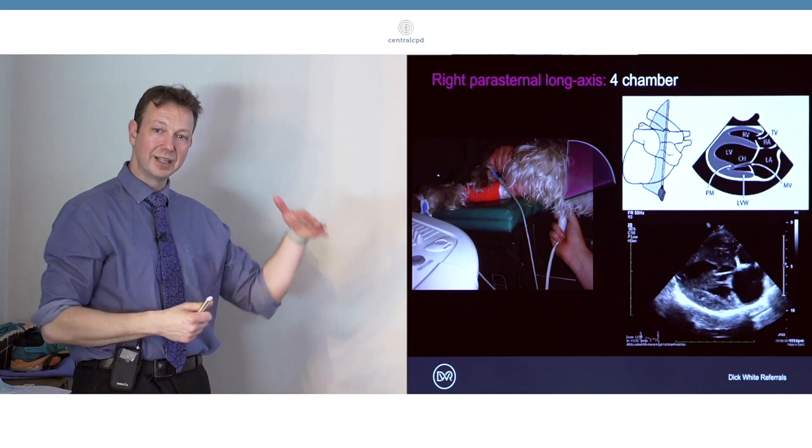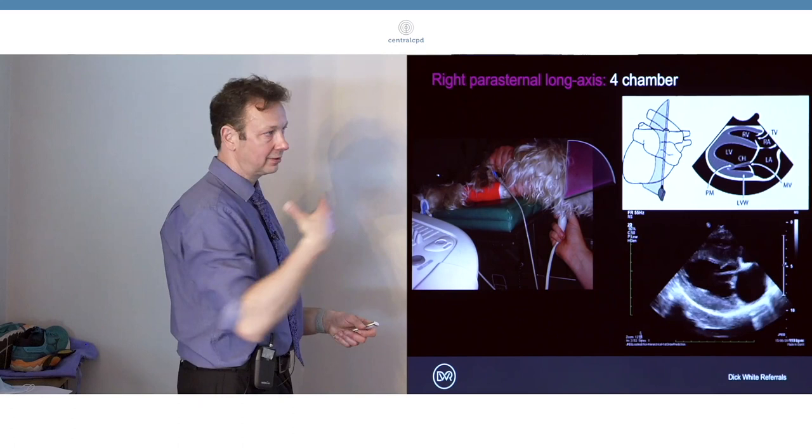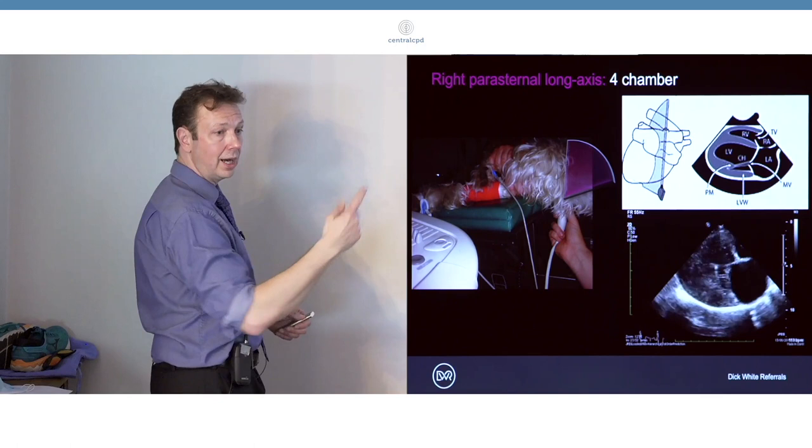We start off around about the third-fourth intercostal space, a good starting point to feel where the apex impulse is most intense, and start there and point up towards the lumbar spine.